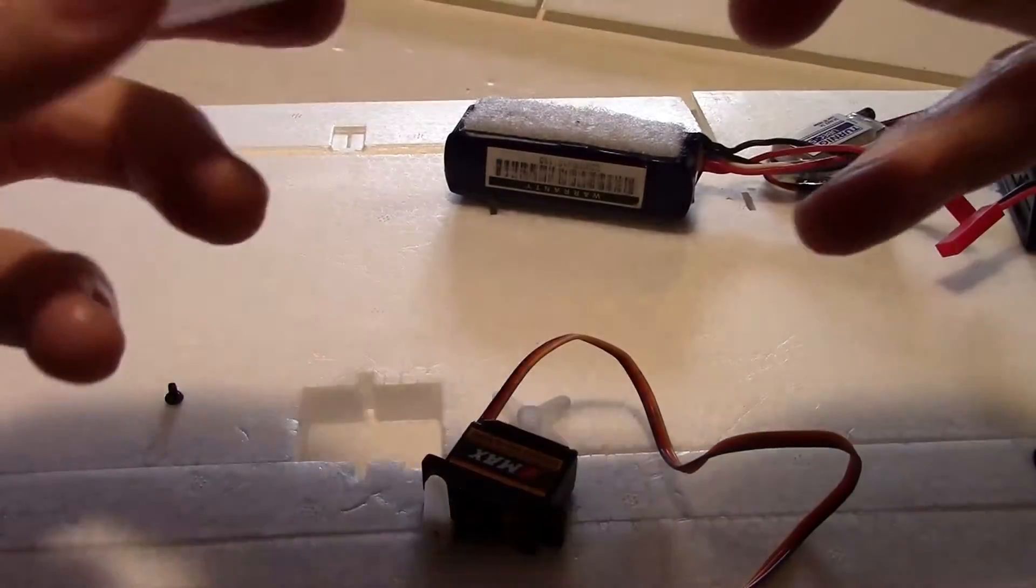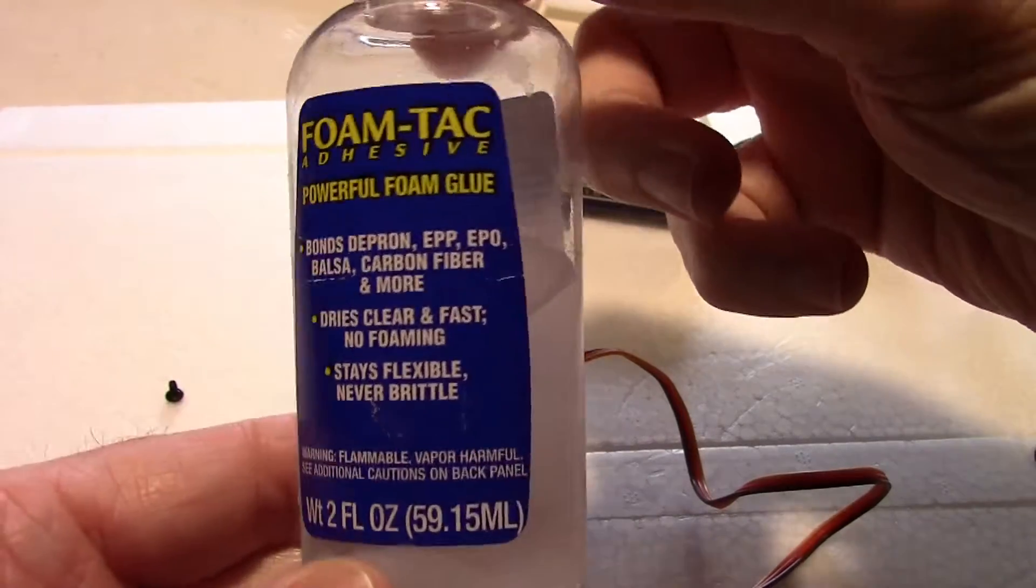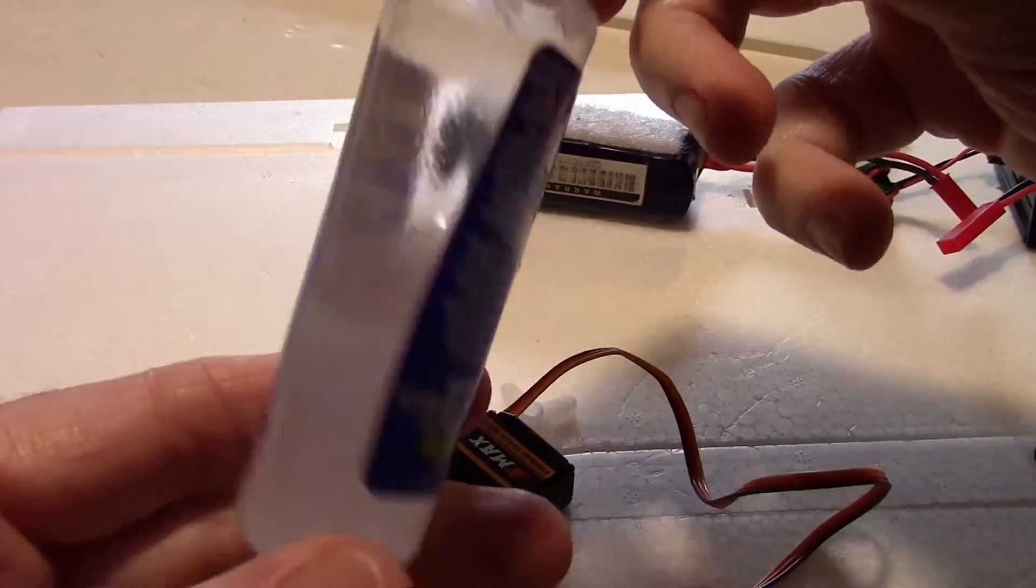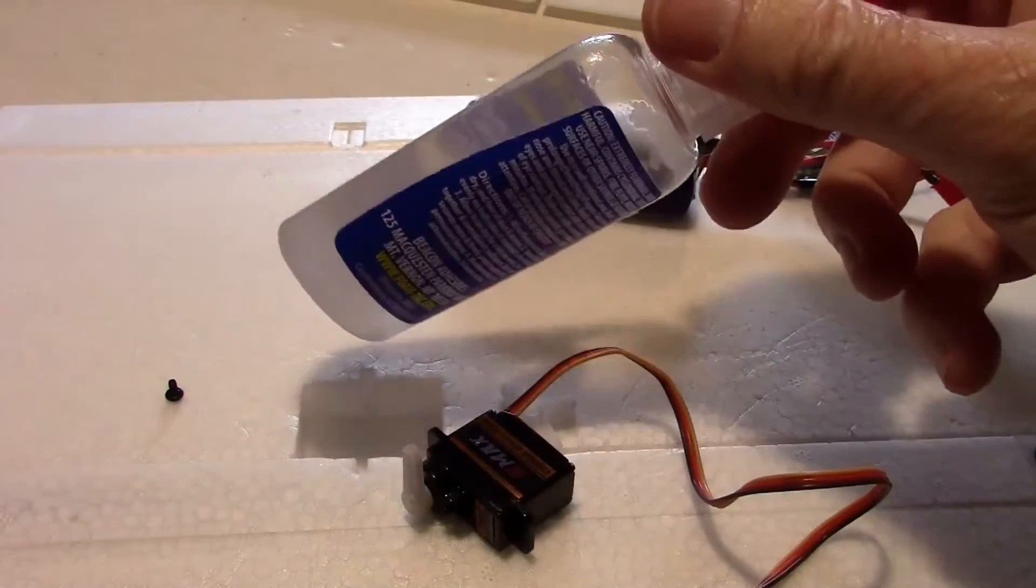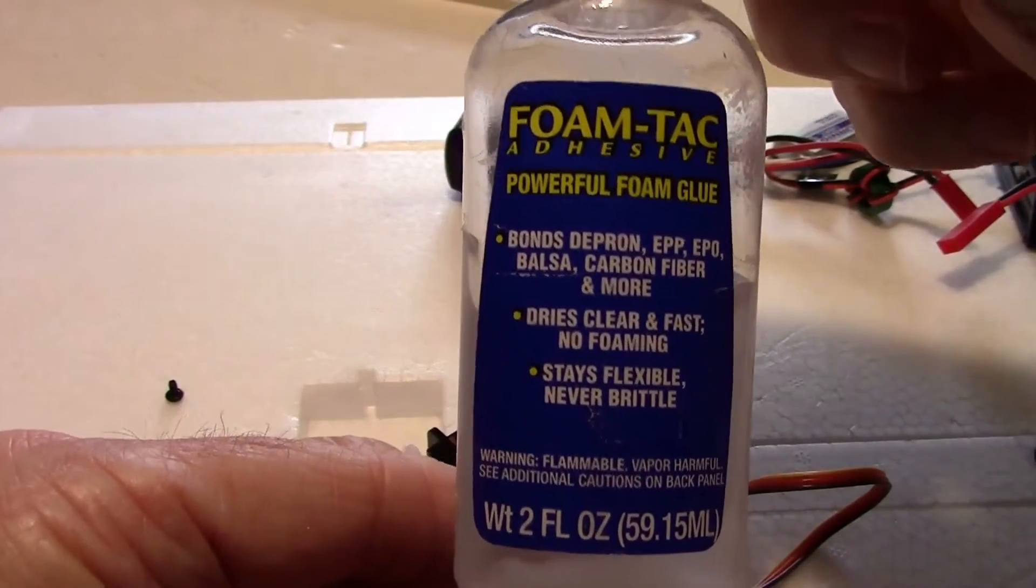I'll probably mention this several times, but I'm going to be using this foam tack cement that I got from Stone Blue Airlines. Stone Blue Airlines sells this because it doesn't affect the foam and it doesn't hurt the foam, yet it really works good. It's kind of like a shoe glue.